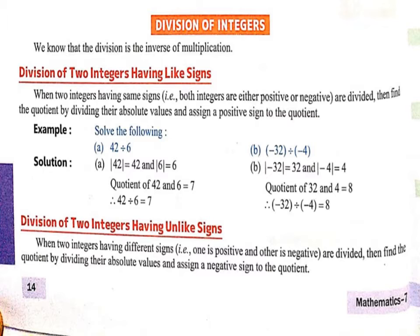यहाँ पर आपको दो examples दिये हुए हैं। Simply हमें 32 divided by 4 करना है तो हमारा 8 आया। But 8 जो हो, बेटा, वो positive sign में आएगा, because both are negative sign.